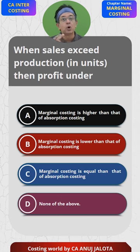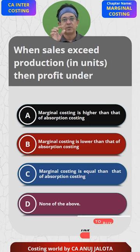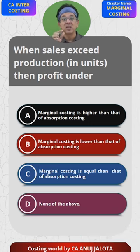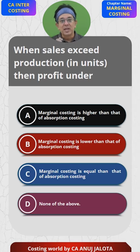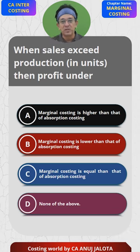then under absorption costing, a large amount of fixed overheads will enter your stock, so they will not get written off. If they will not get written off, then profit under absorption costing will always be higher.